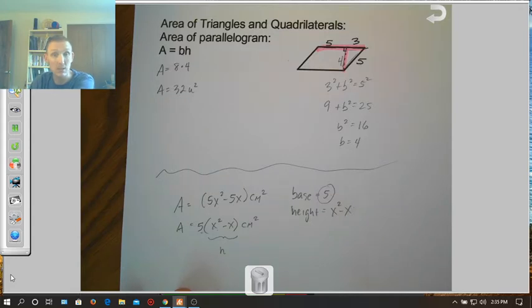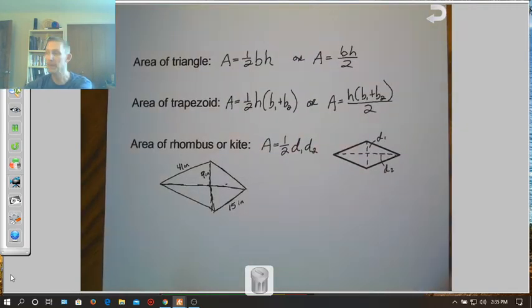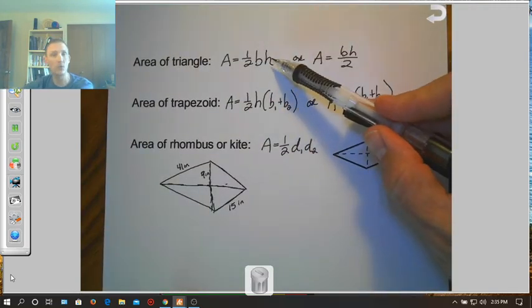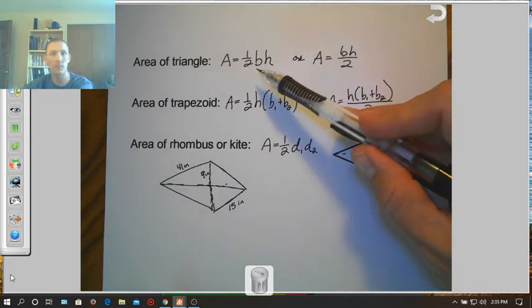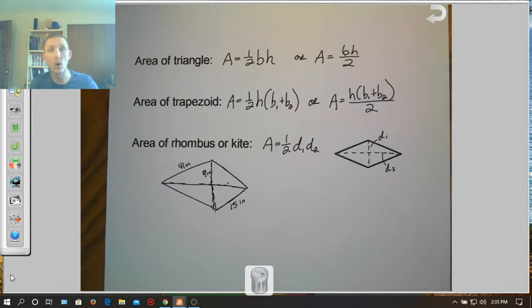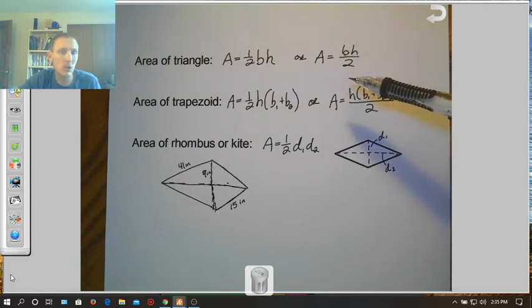So we factored out the 5 in front, and the expression left in parentheses is the height. So that's basics of area, base times height for a parallelogram. Well, let's take a look at a couple other formulas here. Area of a triangle we've used before. So we're not going to spend a lot of time worrying about that. But the area of a triangle can be 1 half base times height, or the area of a triangle can be base times height over 2. It all depends on the clues that you're given and how you want to use that formula.